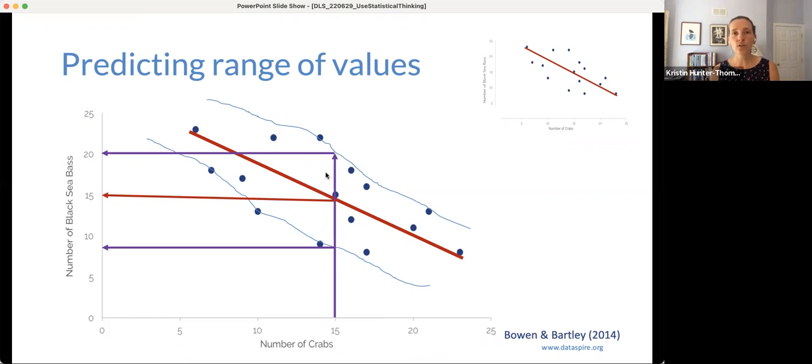Oftentimes when we're looking at scatterplots and we're trying to make predictions forward, or we're trying to get a sense of what's going on in the data, we might ask a question. This is that black sea bass example we talked about yesterday. If a pot has 15 crabs in it, how many black sea bass would it have? This is the kind of word problem that shows up a lot in our math classes.